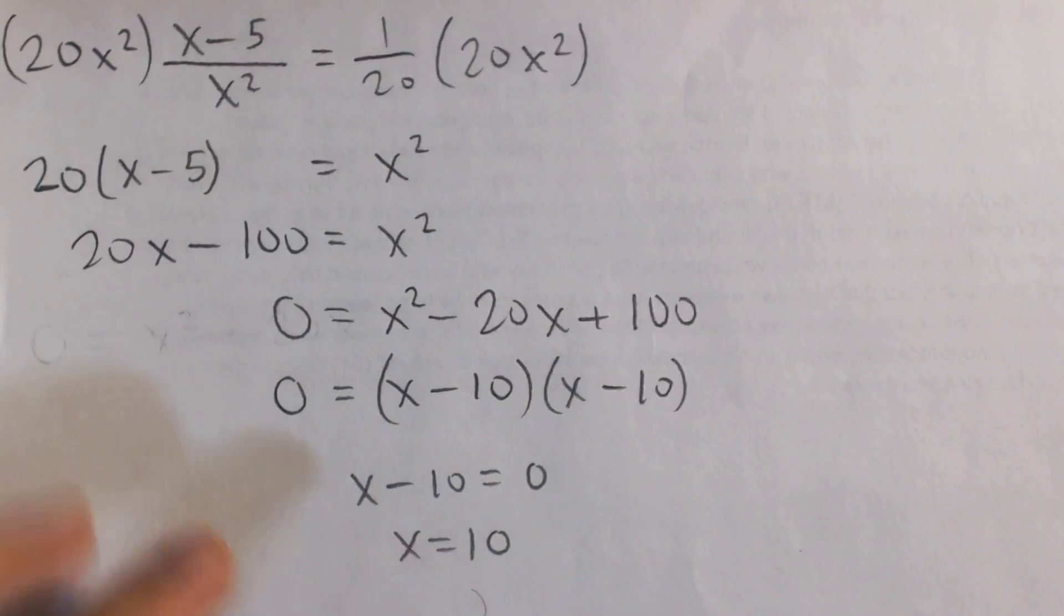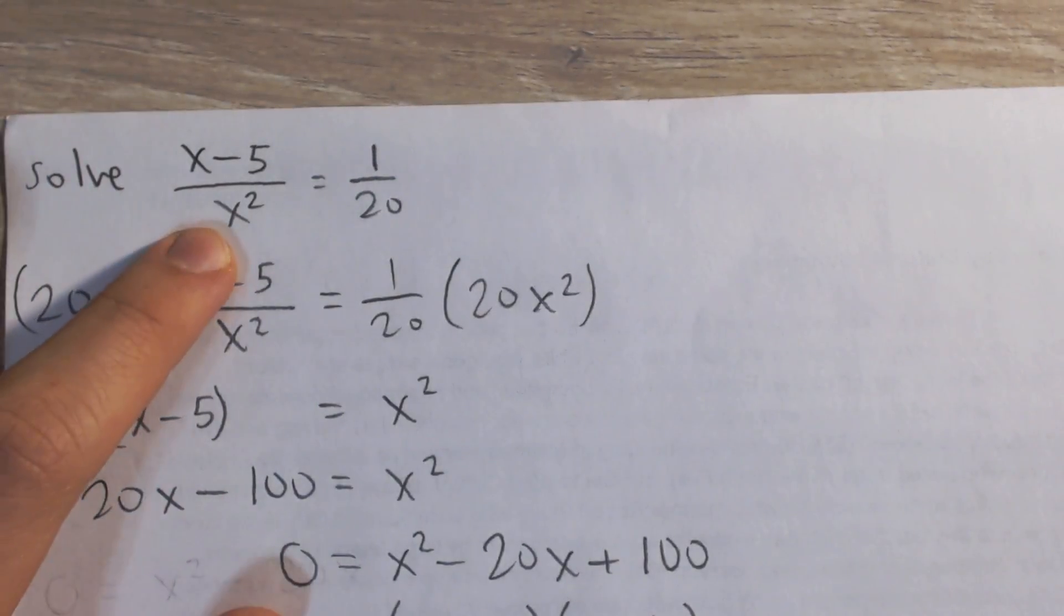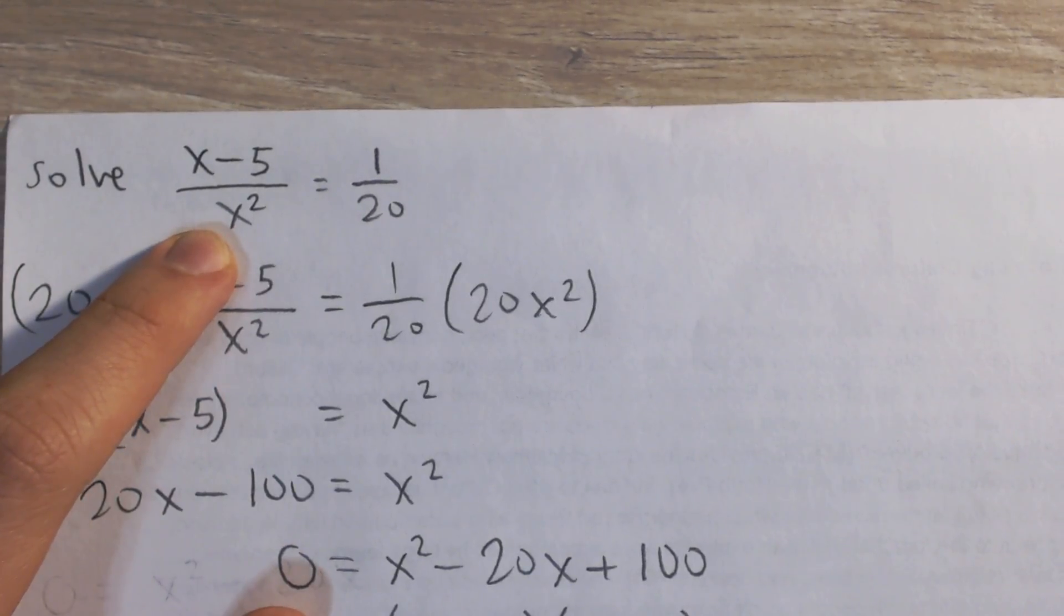You can actually check this. We should always, whenever you have rational equations, always check to make sure it doesn't mess up the denominator, you're not accidentally dividing by 0.